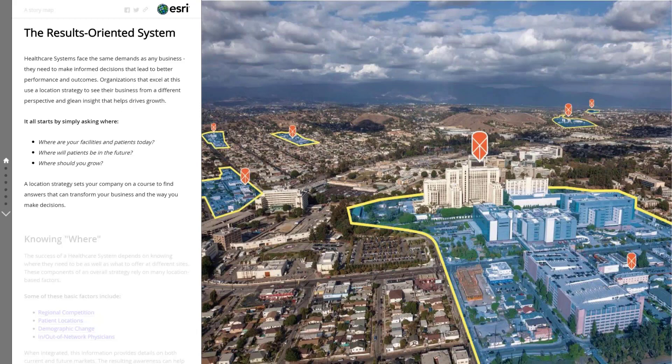Healthcare, by its nature, is a truly altruistic endeavor. Yet we know that a health system is still a business and as such faces many of the same kinds of demands as any business. You're always looking for ways to streamline operations and use your resources efficiently while also improving outcomes — in other words, looking for ways to work smarter instead of harder. We've worked with a number of organizations that have employed a location strategy that allows them to see their business from a completely new perspective, and that new perspective provides novel insights that can really help to drive growth.